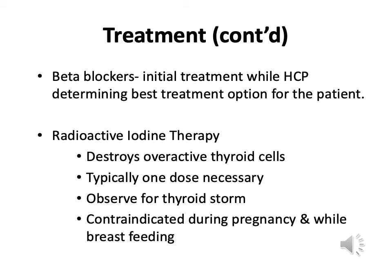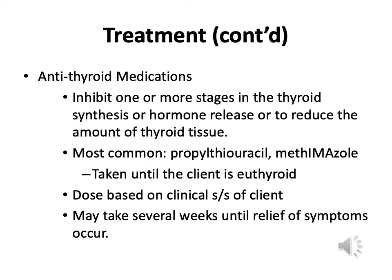Other treatment includes beta blockers to address cardiac and EKG issues related to hyperthyroidism. Typically one dose of radioactive iodine therapy is sufficient, but we watch for thyroid storm. With antithyroid medications, it's important that patients take them until they become euthyroid — normal thyroid levels. The dose is based on signs and symptoms, and it could be a couple of weeks after treatment before symptoms are relieved.